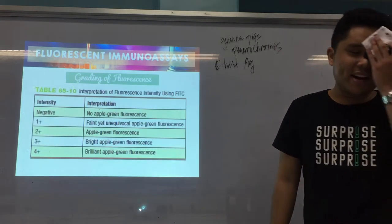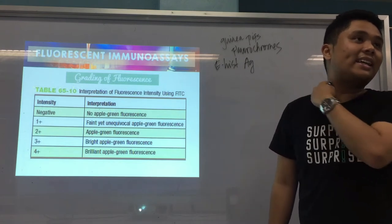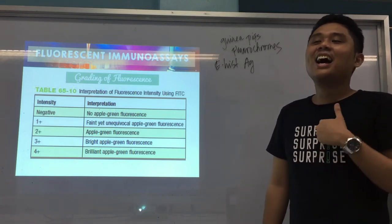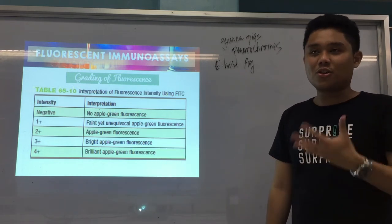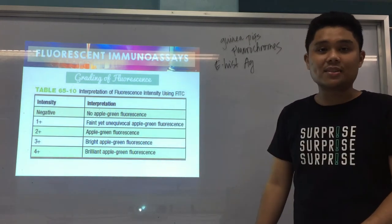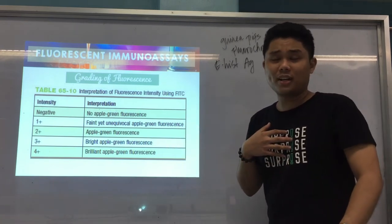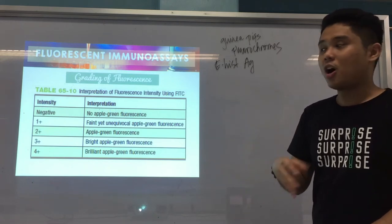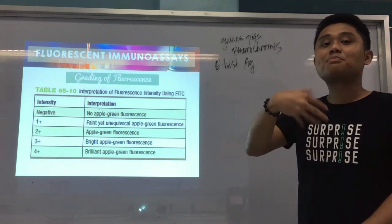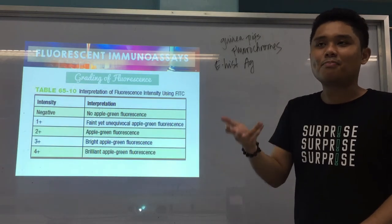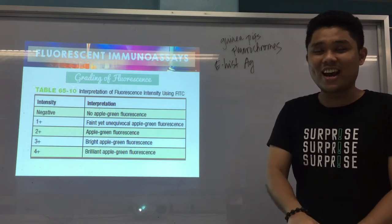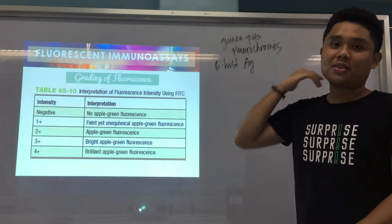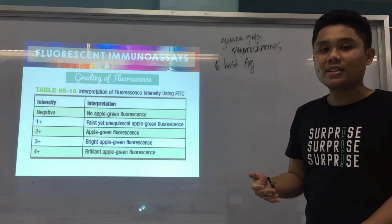Here is the grading of FITC fluorescence. Negative means no apple green fluorescence. One plus is faint but unequivocal. Two plus is apple green. Three plus is bright. Four plus is brilliant. This grading has come up in previous board exams, so it's important to know. The main point of fluorescent immunoassays is that we use fluorochromes as labels.